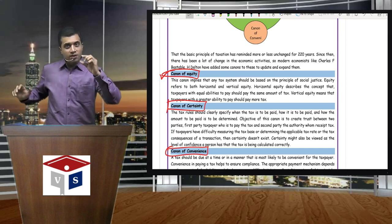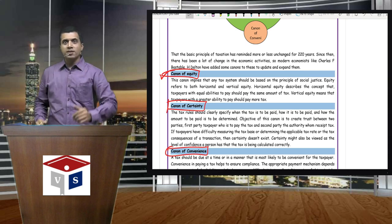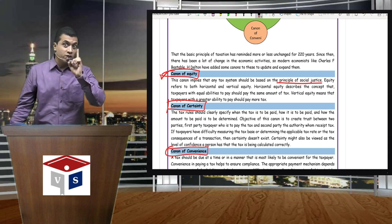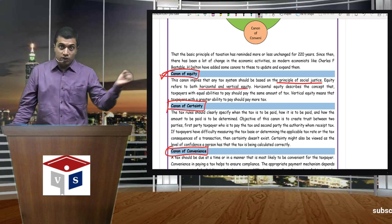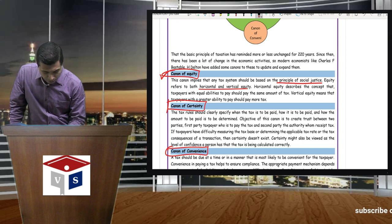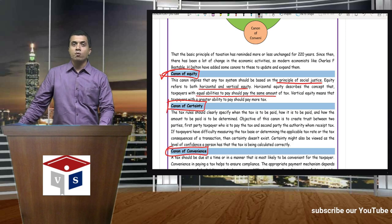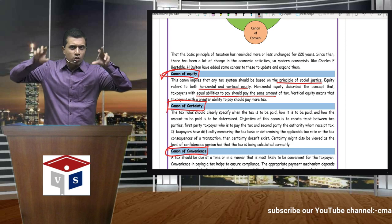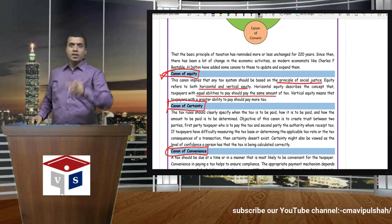Social justice will be given to everyone. The more money you have, the more tax you will pay. This Canon implies that any tax system should be based on the principle of social justice. Equity refers to both horizontal and vertical equity. Horizontal equity describes the concept that taxpayers with equal ability should pay the same amount of tax — meaning if Mr. A and Mr. B both have the same income, then they pay the same tax.